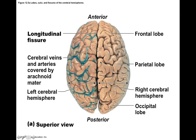Gyri are important because they add surface area to the outer surface of the brain, which means we can have more brain matter due to these folds. This allows us to have more cells and therefore more computational power. The infoldings nearby are the sulci — if gyri are the hills, sulci are the valleys. The longitudinal fissure separates the two cerebral hemispheres. On one side you can see blood vessels; on the other they've been dissected away so you can see the gyri and sulci better.